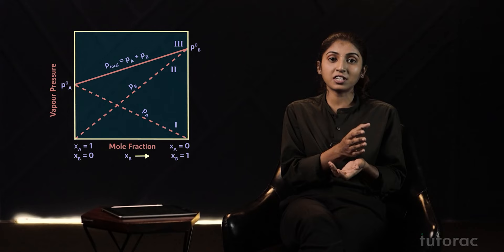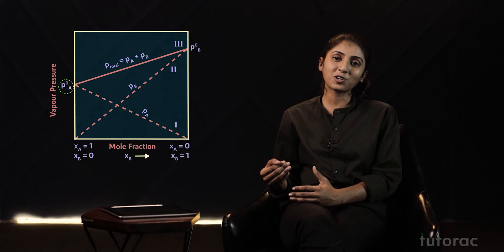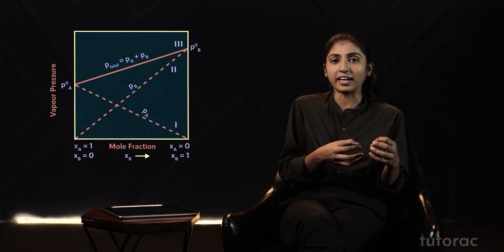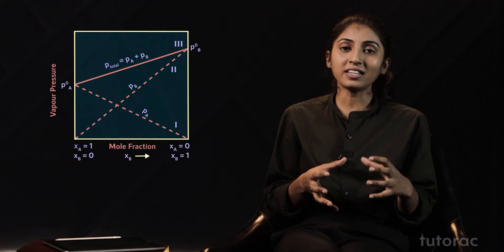Now when we plot a graph between partial vapor pressure and mole fraction, in the leftmost corner we have P°_A and in the rightmost corner we have P°_B. Let's suppose that component B is more volatile than component A, and that is why the value of P°_B is somewhat greater than the value of P°_A.